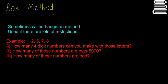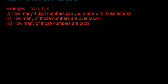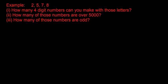We'll look at an example here. You have the numbers 2, 5, 7, and 8, and it's asking you to do a few different things with that sequence of numbers. How many 4-digit numbers can you make with those numbers? How many of those numbers are over 5000? And how many of those numbers are odd? So there are 3 separate restrictions. For part 1 — how many 4-digit numbers — the answer is just 4 factorial, which is 24.